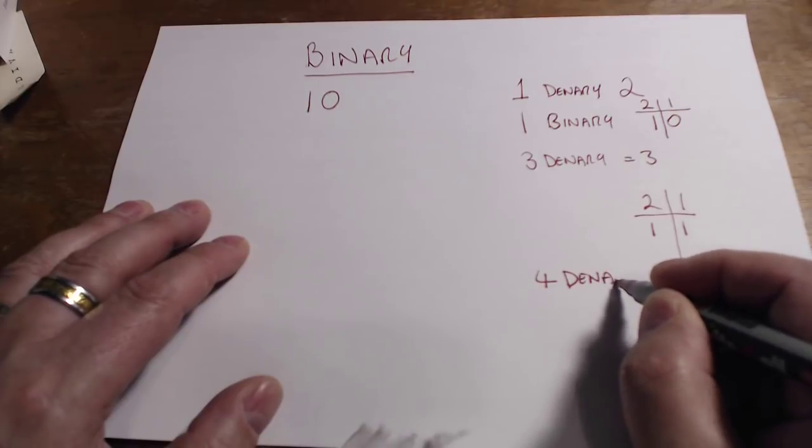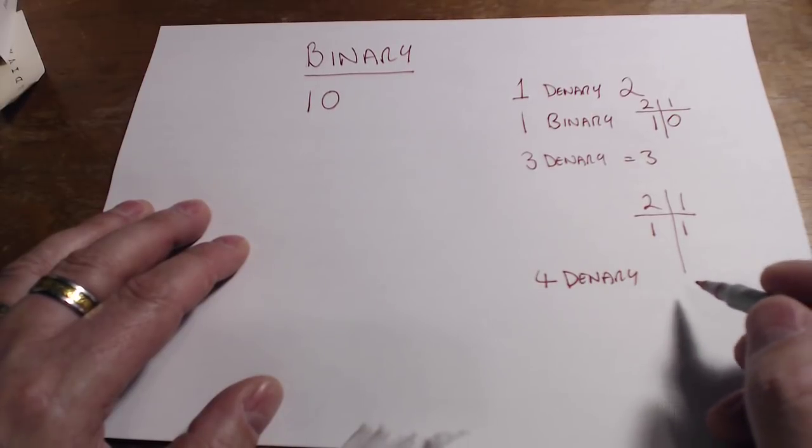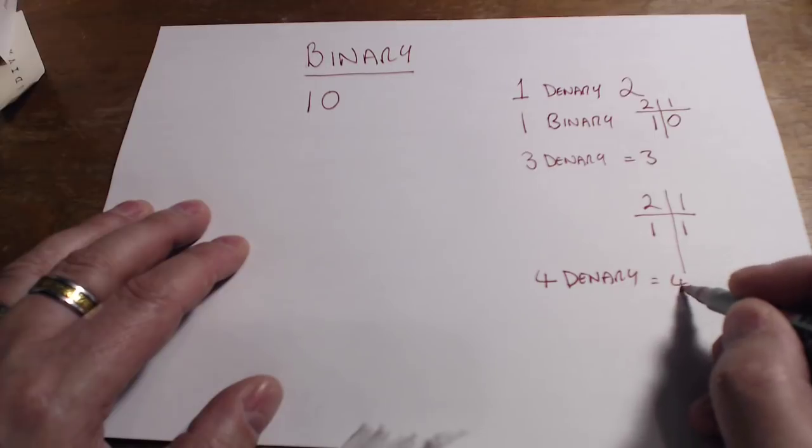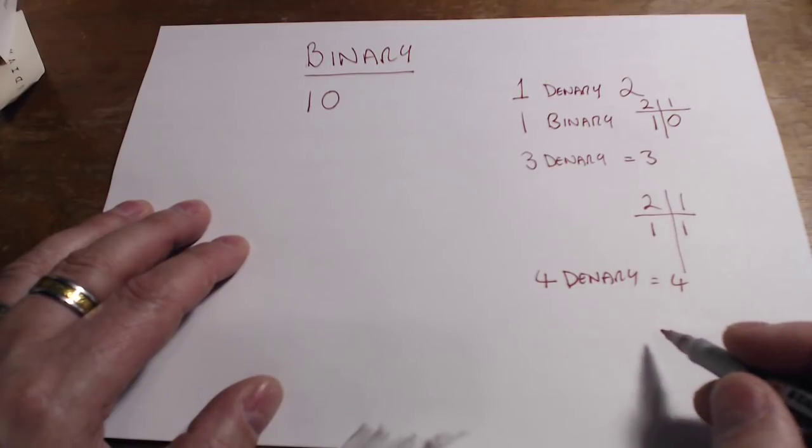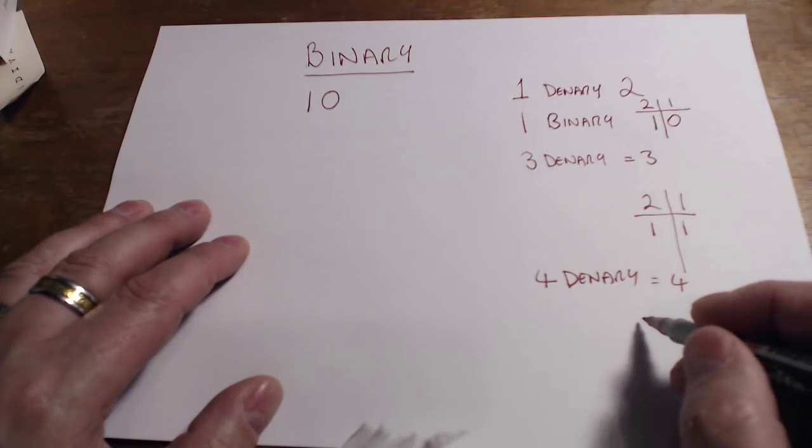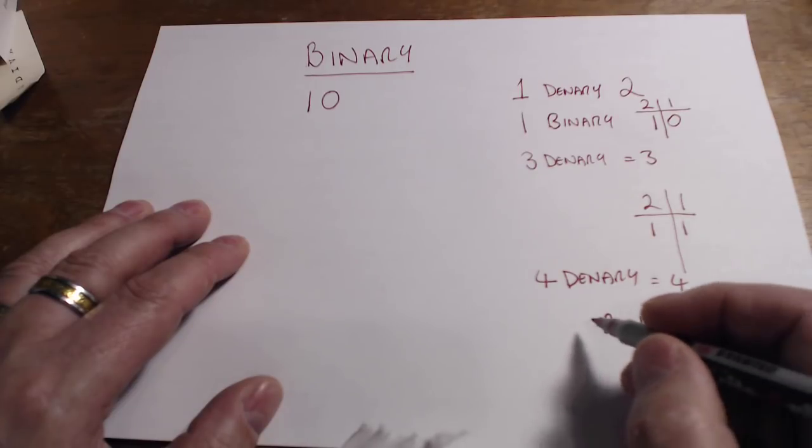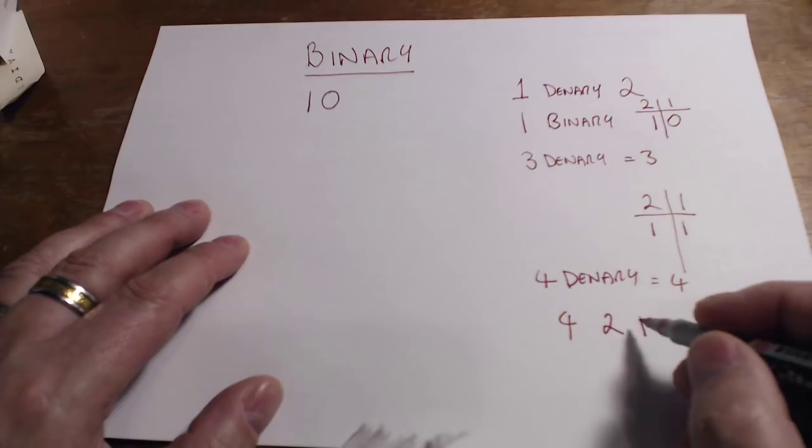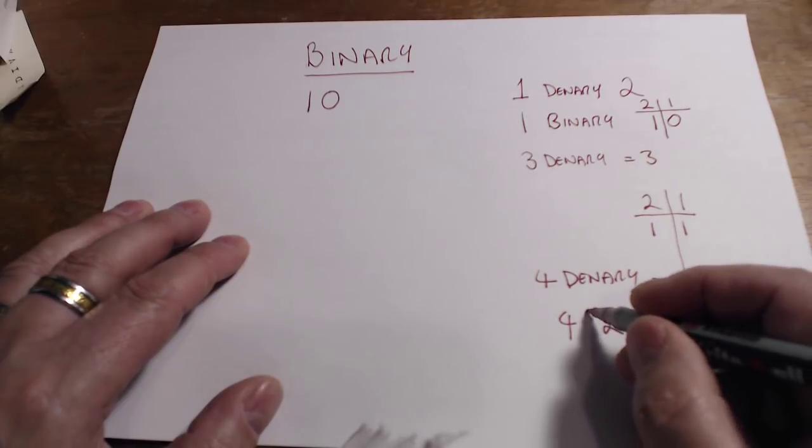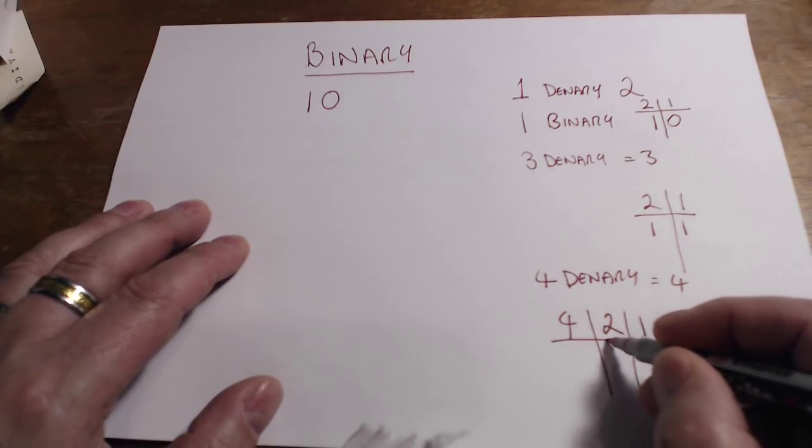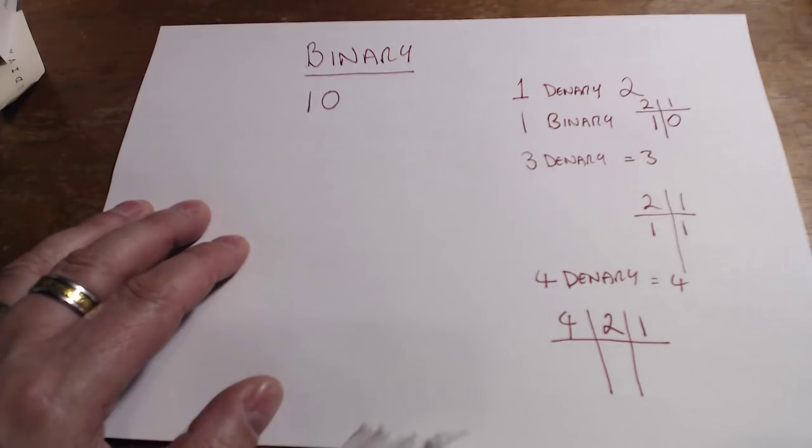So how do we write the value four in denary in binary? Well, let's use the same sort of notation again. So I now need a column for one, a column for twos, and a column for four. Every time I go up a column in binary, I double the number.